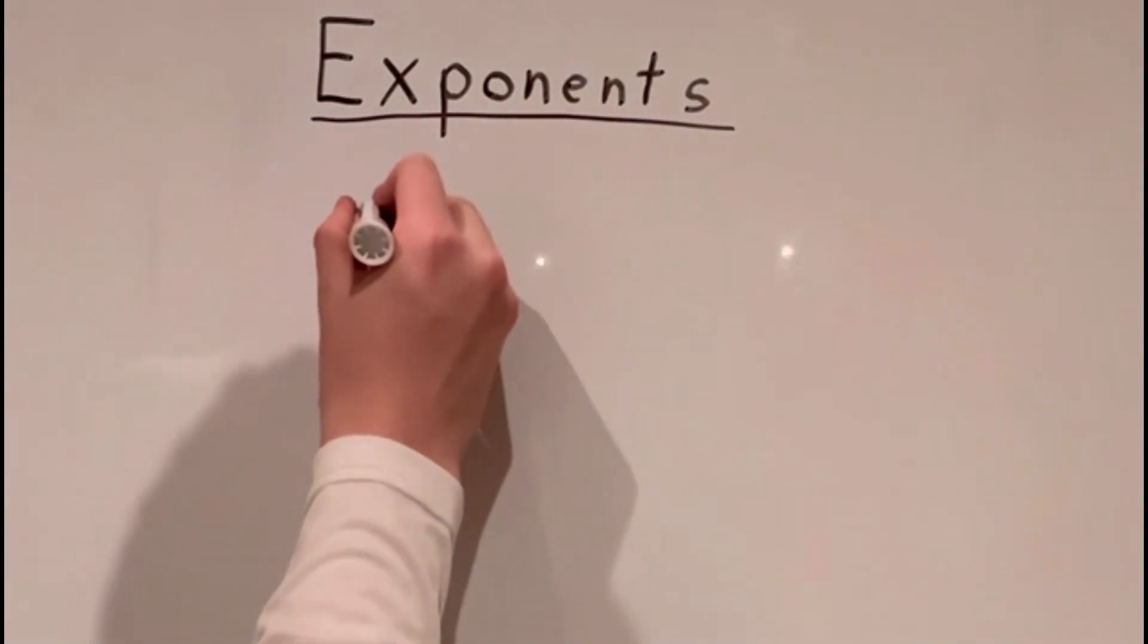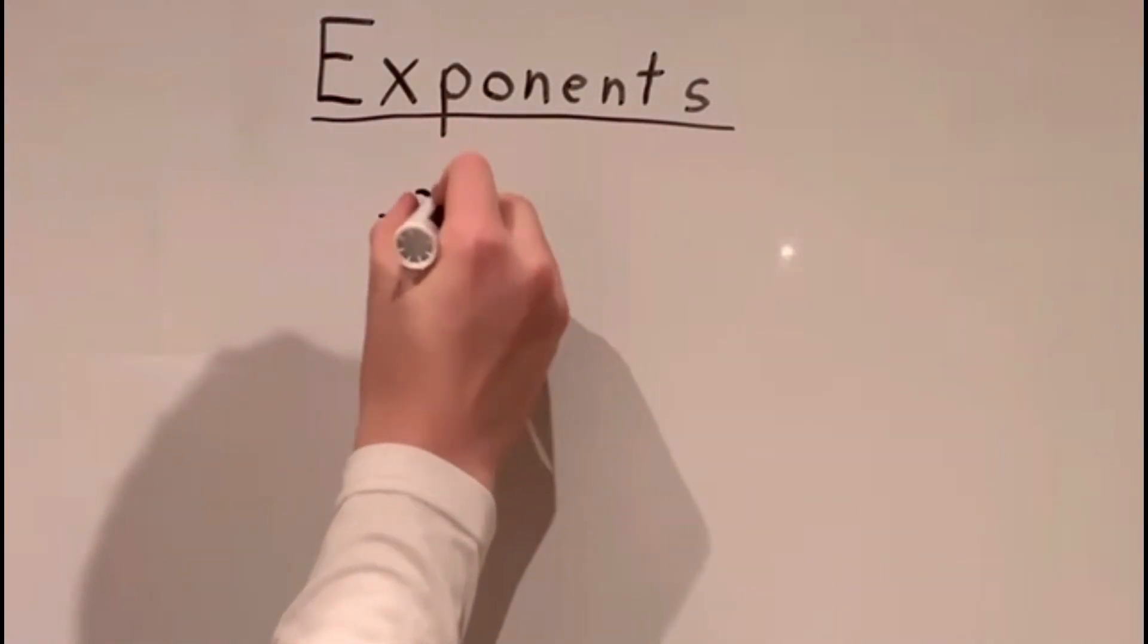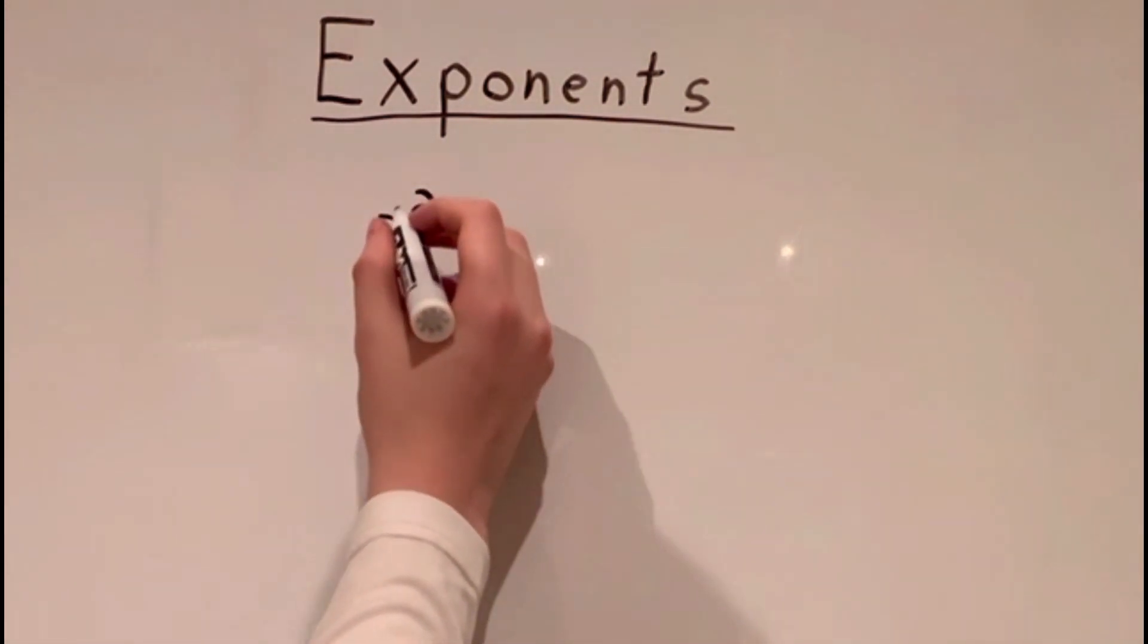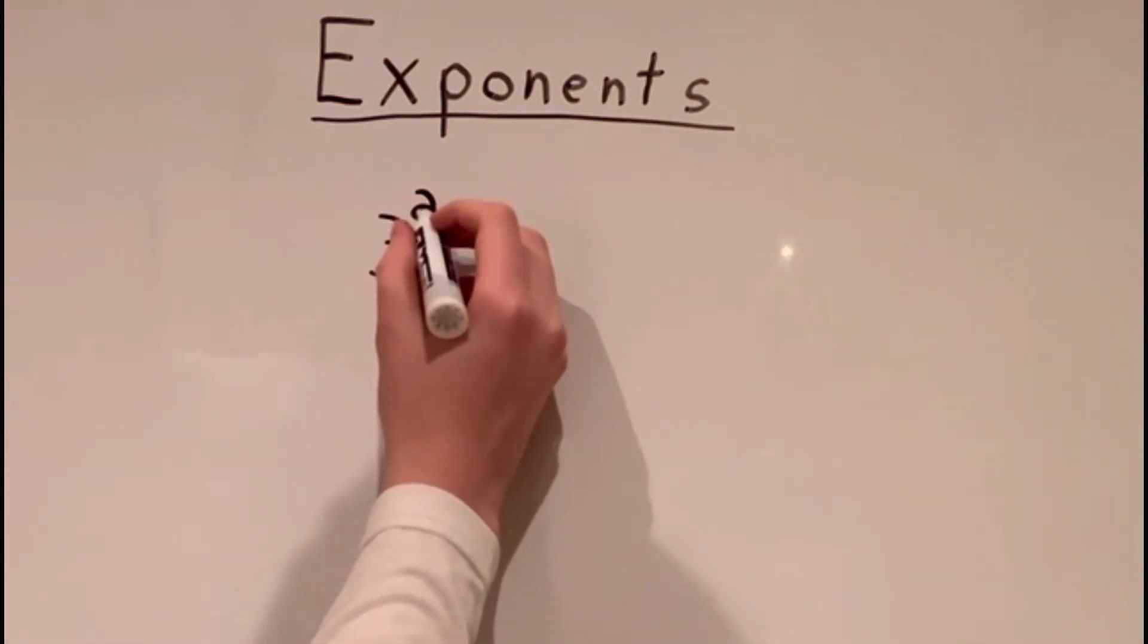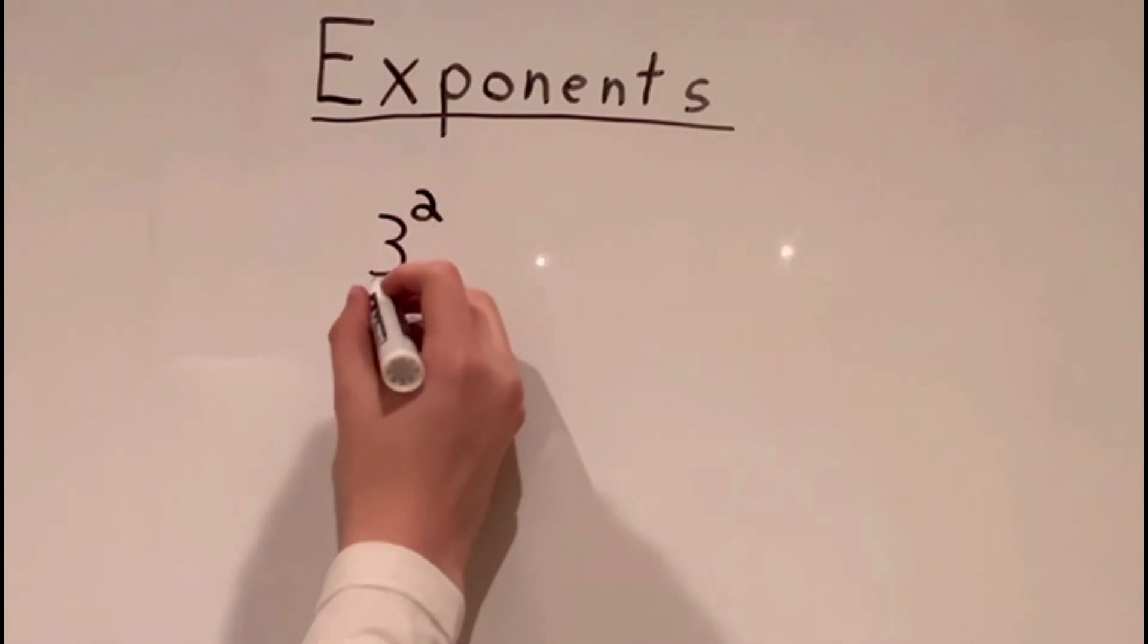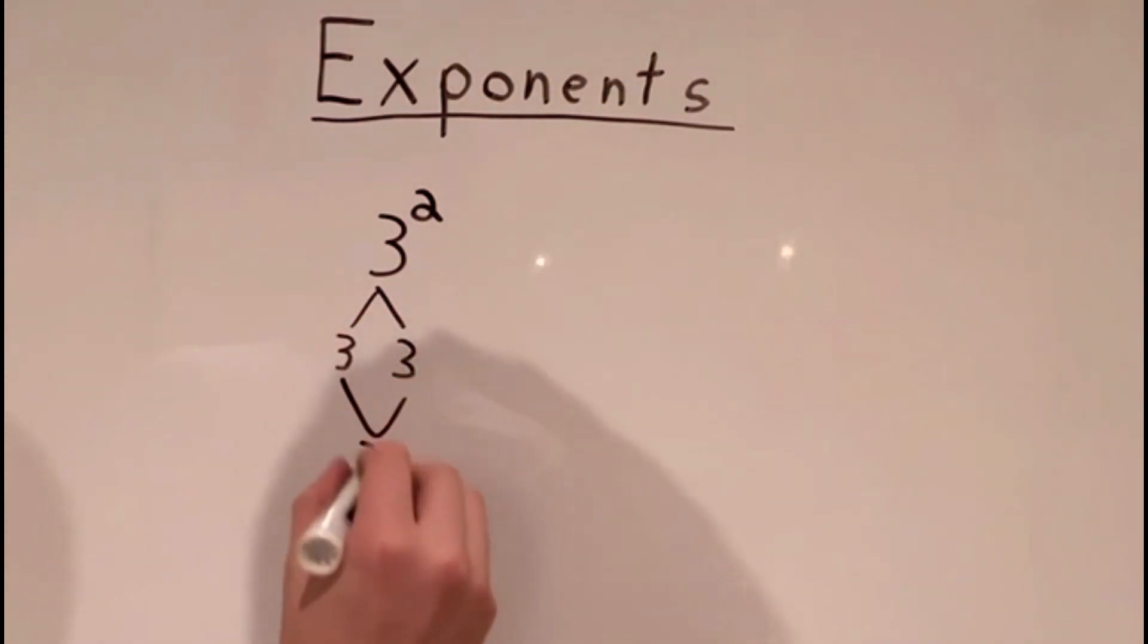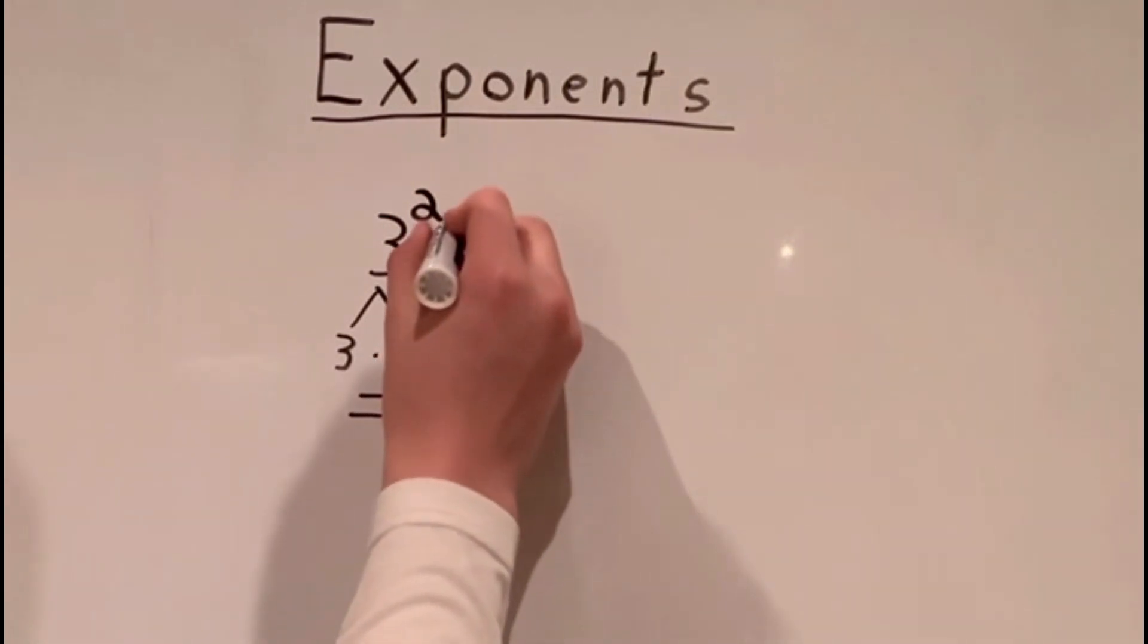Let's start off with 3 squared. You can also think of this as 3 times itself 2 times. So let me write that down here. 3 multiplied by itself, which is 3, 2 times since there's 2 threes here. Now 3 times 3 equals 9 and that would be our answer for 3 squared.